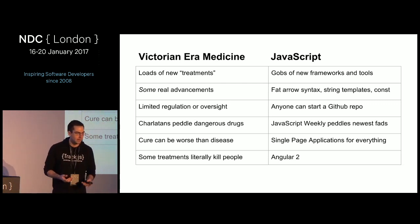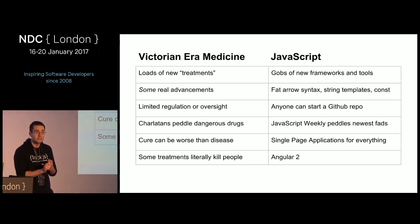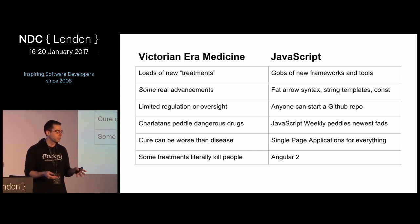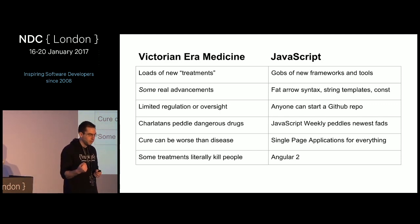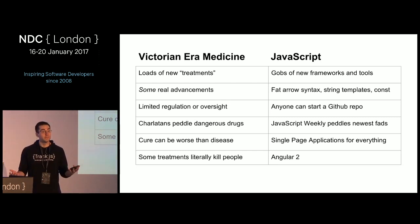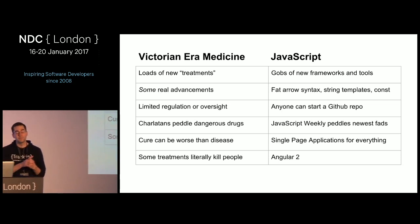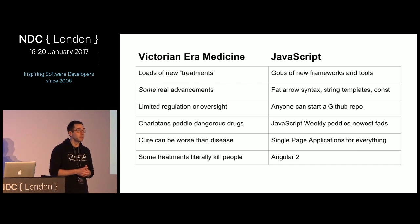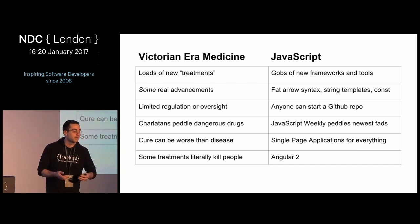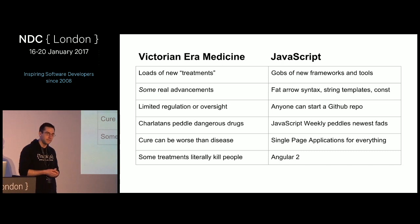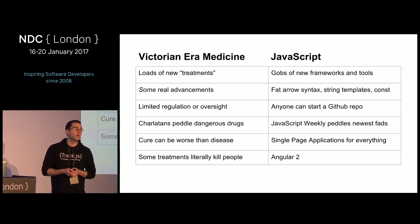Within all of those new ideas there are some real advancements. We've got fat arrow syntax, we can do string templating 20 years after JavaScript was developed, and we have const so we can set a variable and say I don't want it to mutate. But like medicine, there's limited regulation or oversight in JavaScript right now — anyone can start a GitHub repo and say it's the best thing ever.